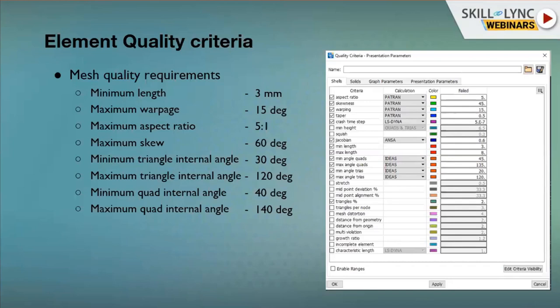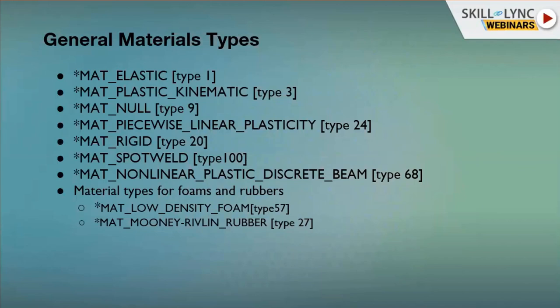Skewness is an angular measure of element quality with respect to angles of ideal element types — you can maintain up to 60 degrees; beyond that you will get negative results. The maximum and minimum triangle angles are also standard checks. You should always check these element quality criteria in your model, and if anything deviates from the limits, correct it before submitting the run.